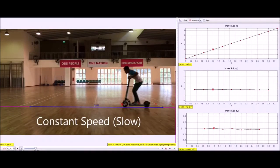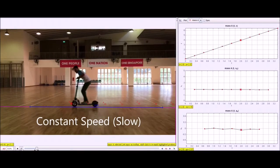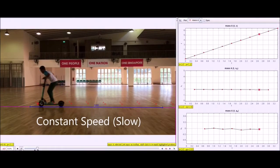we can draw three graphs: the distance-time graph at the top, the speed-time graph in the middle, and the acceleration-time graph at the bottom.